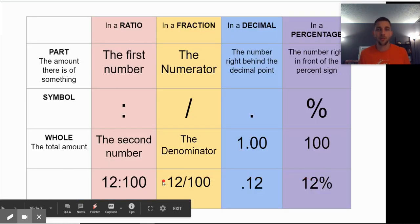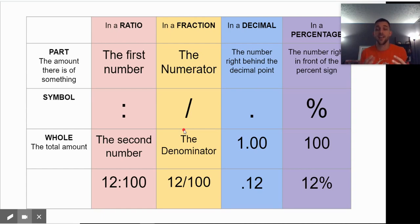So we see our comparison. The ratio is 12 out of 100. The fraction is 12 over 100. The decimal is 0.12 or 12 hundredths. And the percentage is 12%. The ratio and the fraction can be simplified, but at the foundation, it is the same.